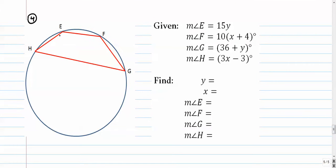All right, so we have 15y. We have 36 plus y. We have angle H is 3x minus 3. And angle F is 10 times the quantity x plus 4.